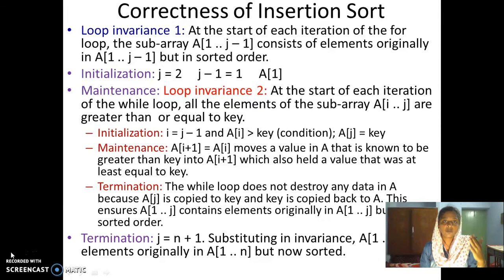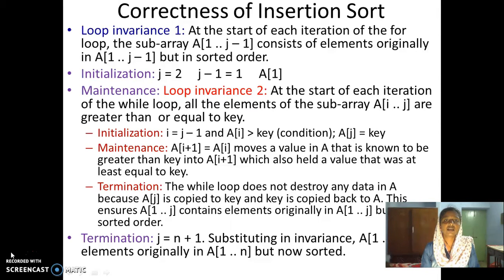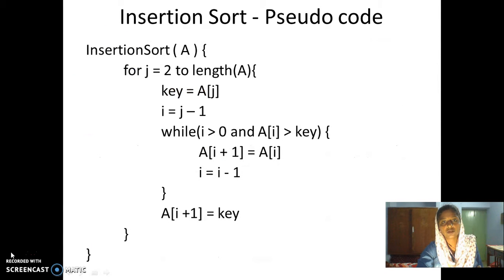Maintenance is proving that if the loop invariant is true before the beginning of an iteration, it is true before the beginning of the next iteration. To establish this, we need the loop invariant of the inner loop, because the body of the for loop mainly has the while loop. The loop invariant of the while loop is: at the start of each iteration of the while loop, all elements of the subarray a[i] to a[j] are greater than or equal to key. When we start the while loop, i is initialized to j minus 1.